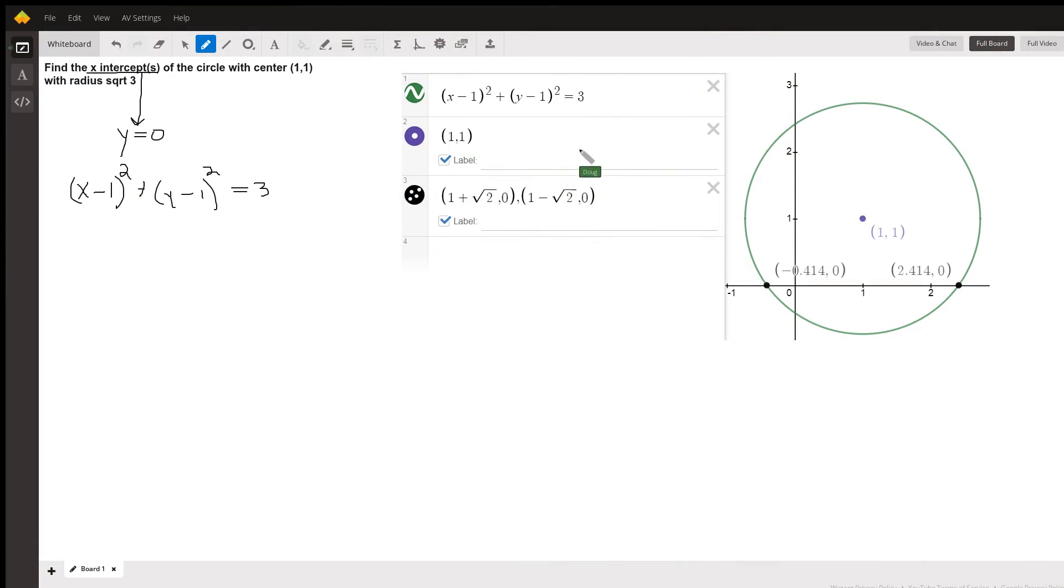Okay, here's a picture of the situation. This is the equation of the circle in center radius form. Center is at (1, 1). This is r squared. Radical 3 squared is 3. That green circle is the graph of that equation.